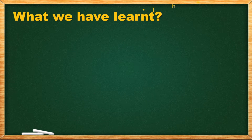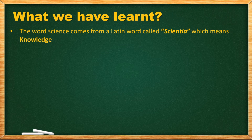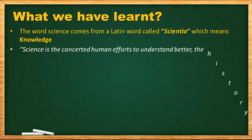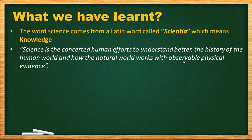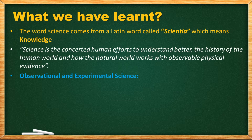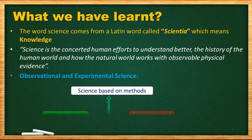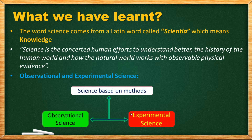Before we begin, let us recall what we learned in the previous class. The word 'science' comes from a Latin word called 'scientia,' which means knowledge. Science is the concerted human effort to better understand the history of the natural world and how it works, with observable physical evidence. There are two types of science based on the process: observational science and experimental science.